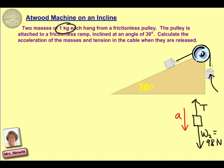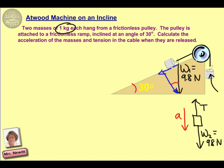Let's look at the free body diagram for the incline object. Any time we have an incline, we use a triangle free body diagram to see the correct components. The weight is still 9.8 newtons directed straight down. One component acts down the ramp — that's the one we're interested in — and one component acts perpendicular to the ramp, which is not important here. The angle of the ramp is 30 degrees, and that angle corresponds to the bottom angle in our triangle, so it is also 30 degrees.